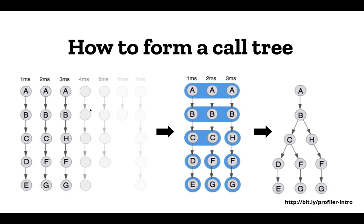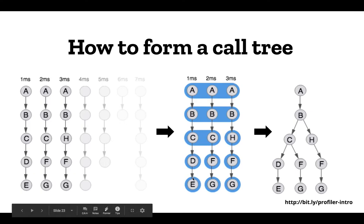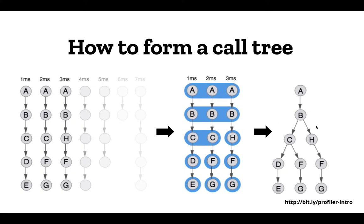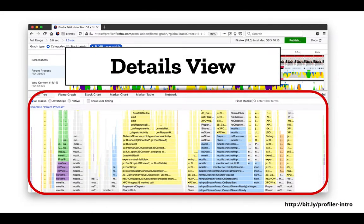In reality, call trees are more complicated than just a single function call stack. Here's an example of how you would take a large collection of samples and form them into a call tree. Zooming in on three of them: A is shared across all three samples, B is shared across all three samples. The first branching happens when B calls C and H, and then further down they continue to call things. You can see on the far right how this ends up turning into a tree structure. Note that F does not form a single call node even though it's at the same depth as B — they are part of different branches.